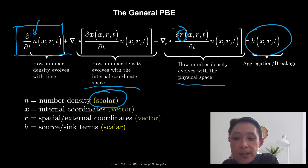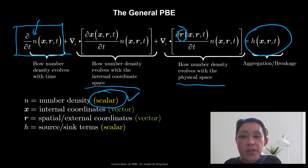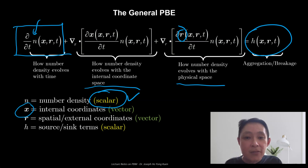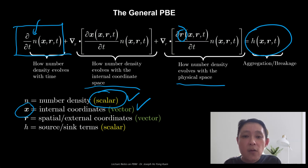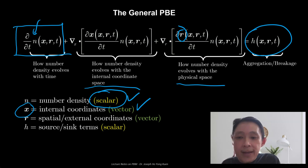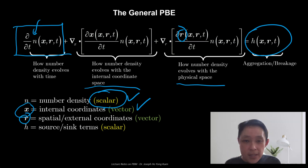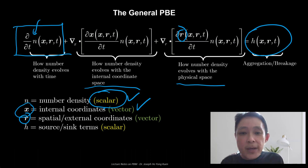The number density is a scalar component, so it's not written in bold face. The x here, which is the property of the particle, we give it the term internal coordinate. This internal coordinate is a vectorial component. It can be anything you pick — whether it's size, volume of particle, mass of the particle, or the edge of a cell. In general it is a vectorial component. R here is your physical space, or what we call the external coordinate, which can go up to three dimensions and is also a vectorial component.